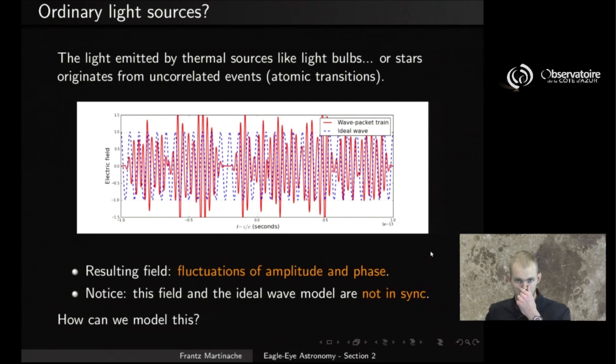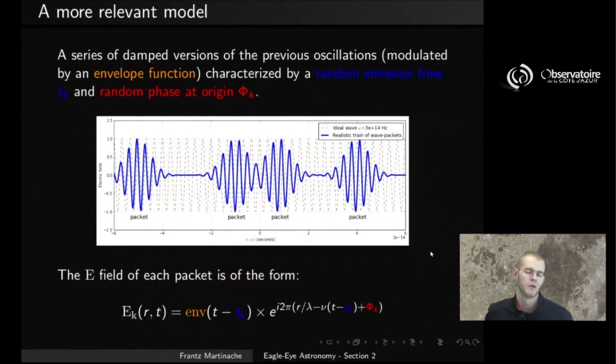Now how do we model that? The way we do this is by simply claiming that every time we have an event, then that event, like this electronic transition, is going to be at the origin of a series of damped oscillations. Here is one example here. You have four such examples on this curve here. And each of these events is characterized by a random emission time, t_k, and a random phase at the origin, phi_k.